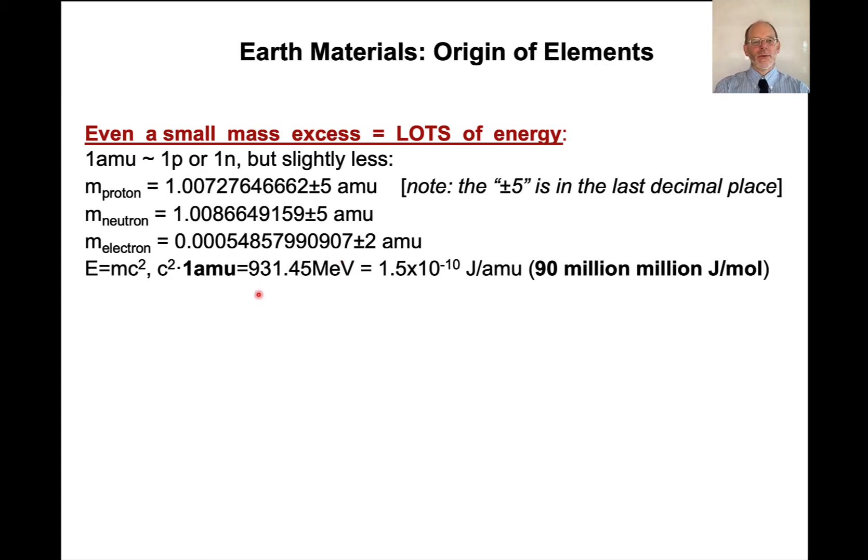Now, how much energy is in 1 amu? It may not seem like very much. If you take the speed of light squared times 1 amu, commonly this is expressed in these sort of weird terms of mega electron volts. And in this case, 931.45 mega electron volts, maybe that seems like a large number. It turns out that if you convert it to joules, it's about 1.5 times 10 to the minus 10 joules.